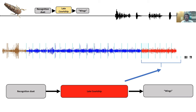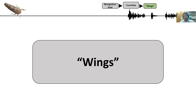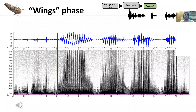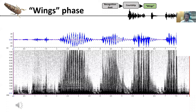After the late courtship, there is the last phase, which I call the wings phase. This phase is very particular: it's the shortest of all, there is only one cycle, no repetition. This is right before mating. We see the end-of-cycle phrase from the late courtship, and then the male basically flaps his wings, and in between the flapping he emits two male pulses, and then they mate.